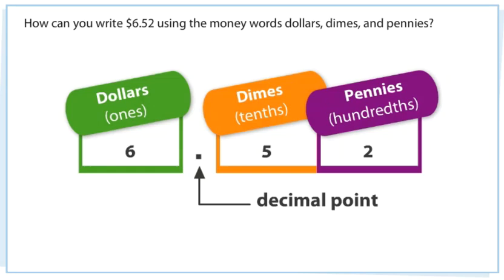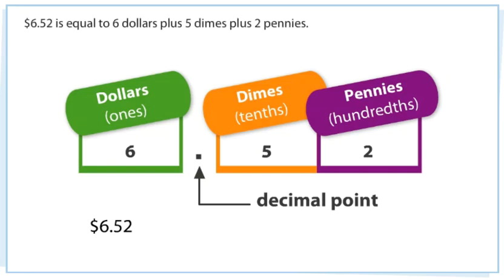How can you write $6.52 using the money words dollars, dimes, and pennies? $6.52 is equal to 6 dollars plus 5 dimes plus 2 pennies.